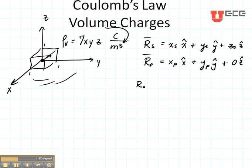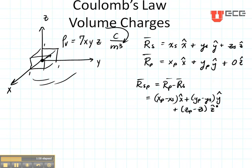Now go back to the same process. I want to find a vector from my source to my field point which is just RP minus RS. It is equal to XP minus XS in the X direction plus YP minus YS in the Y direction plus ZP